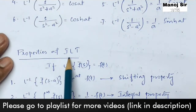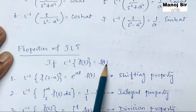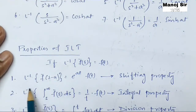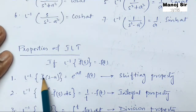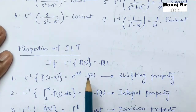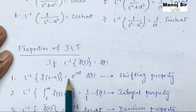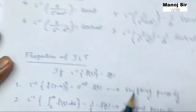From the properties of inverse Laplace transform, we have the shifting property: if inverse Laplace transform of F̄(s) equals f(t), then inverse Laplace transform of F̄(s − a) can be written as e^(at) · f(t).